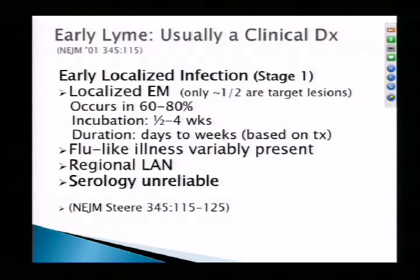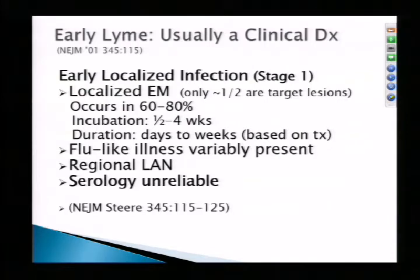Only half of the rashes are target lesions — the one I showed was more confluent erythema without the classic target appearance. Erythema migrans occurs in 60% to 80% of patients who acquire Lyme disease. Incubation is anywhere from half a week up to four weeks. Duration of the rash is typically days to weeks, depending in part on whether there's treatment. A flu-like illness may or may not be present, regional lymphadenopathy may occur, and serology is unreliable at this stage.